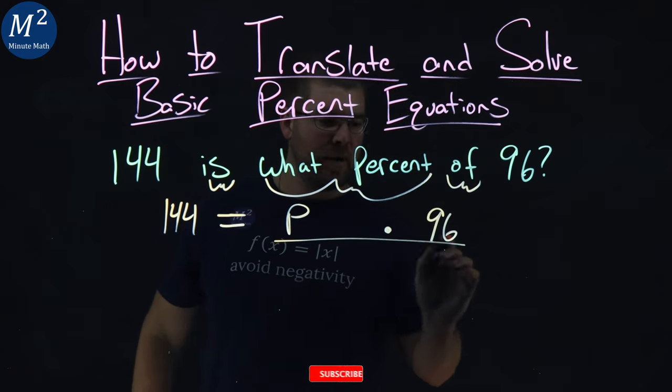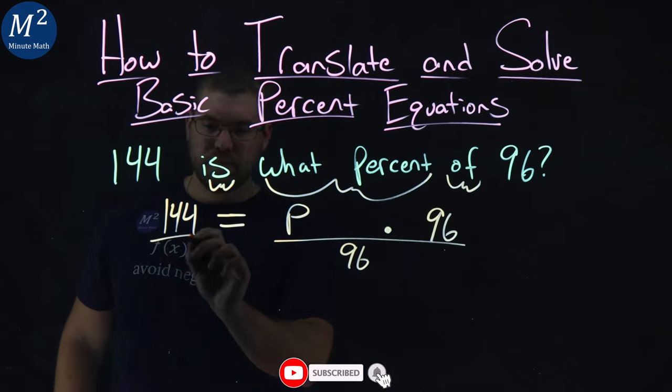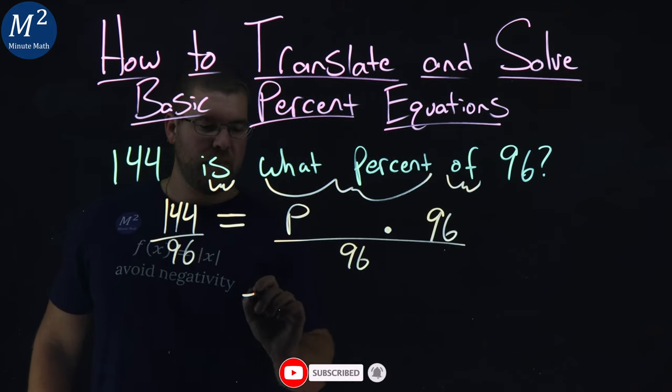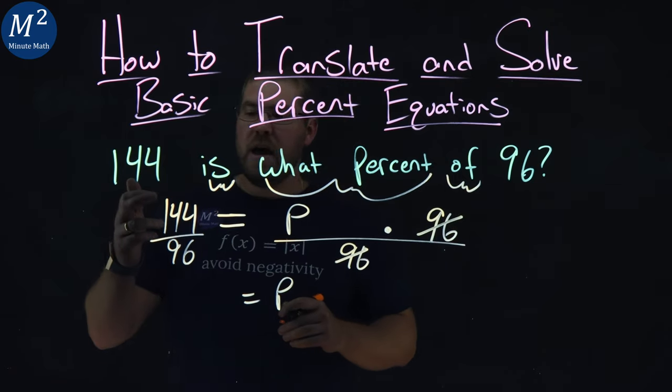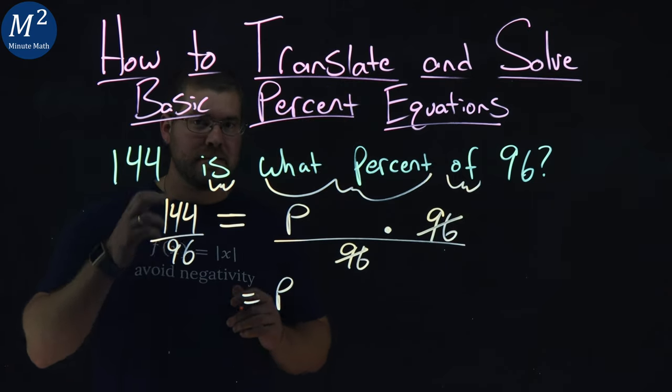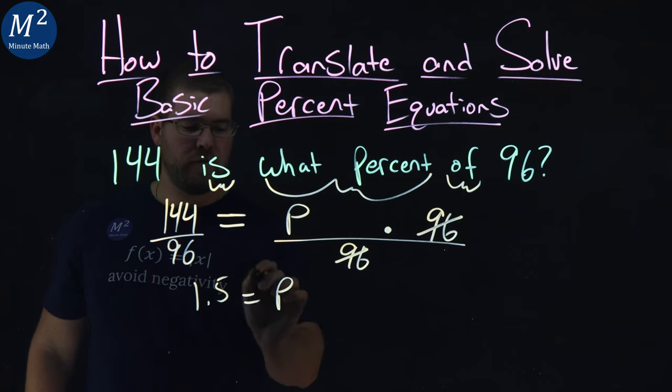Divide both sides by 96. And I'm left with P by itself, right? 96 cancels on the right-hand side. And 144 over 96 as a decimal is 1.5.